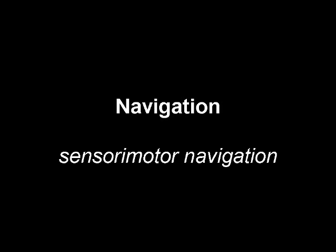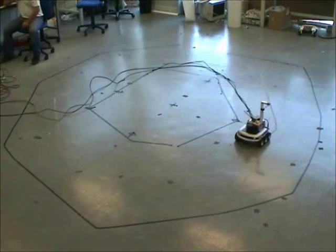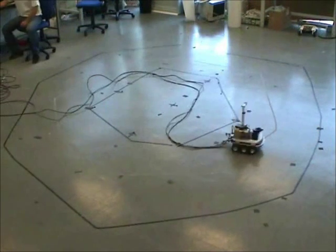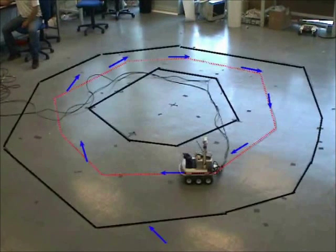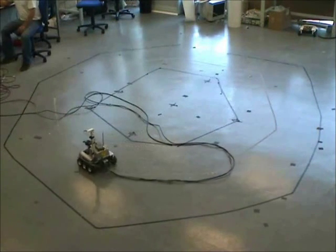Sensory motor navigation relies on the learning of conditionings between perceptions, in our case place cells, and actions, meaning the directions to head for. Recognition of a specific place cell triggers the associated action.